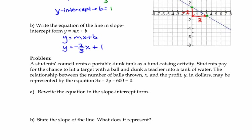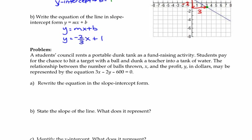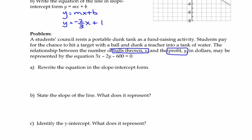The next question is kind of like last unit. When you had a problem and you had to explain what different things mean. And so that's going to come up again on your unit exam. So student council rents a portable dunk tank as a fundraising activity. Students pay for the chance to hit a target with a ball and dunk a teacher in the tank of water. The relationship between the number of balls thrown, x. So this is really important. What does each variable stand for? So the number of balls thrown is x. And the profit is y. You always need to figure out, okay, who's who? Who's x and who's y? What are my variables standing for? The profit, y.